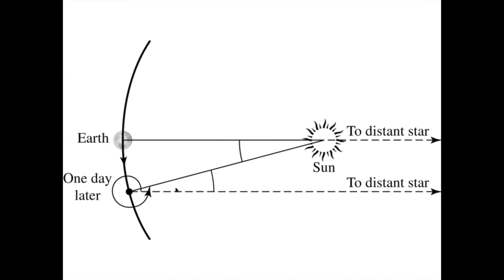This difference is small, but it accumulates. 24 hours of sidereal time equals 23 hours and 56 minutes and 4 seconds of solar time.